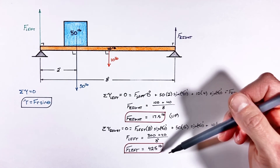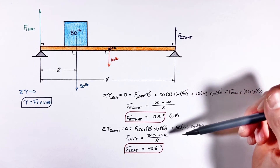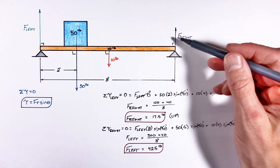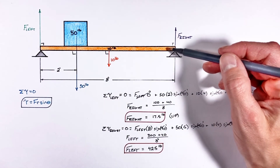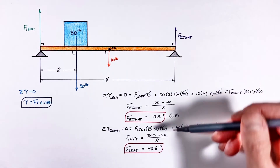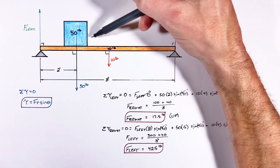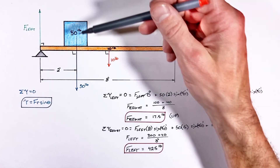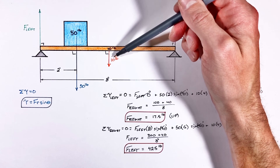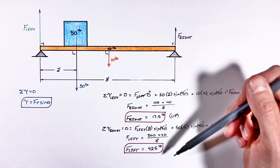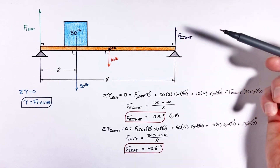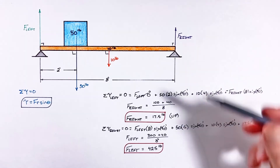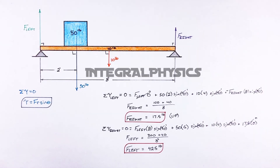Solving, we find the force on the left support is 42.5 pounds. We can verify this result: the two upward forces — 17.5 and 42.5 pounds — add up to 60 pounds, which equals the total downward load the supports are holding. Going back to Newton's laws, a total downward force of 60 pounds plus a total upward force of 60 pounds gives a net force of zero, confirming the beam and block remain static.